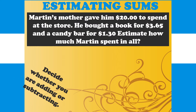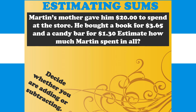Let us begin to estimate using a word problem. Martin's mother gave him $20 to spend at the store. He bought a book for $3.65 and a candy bar for $1.30. Estimate how much Martin spent in all. We must decide whether we are adding or subtracting by looking for a clue word. The clue word here is 'in all,' which represents addition. We will set up our number sentence using the prices of the book ($3.65) and the candy bar ($1.30).